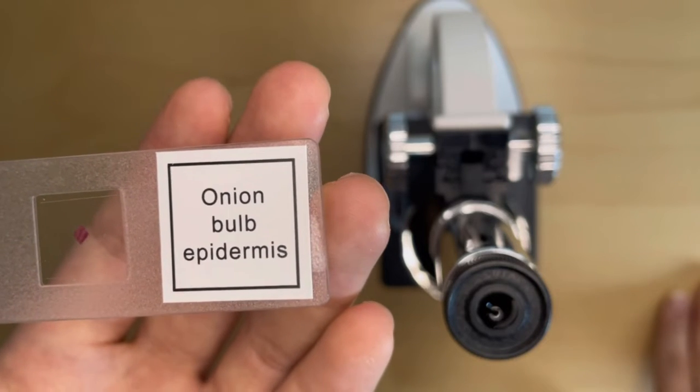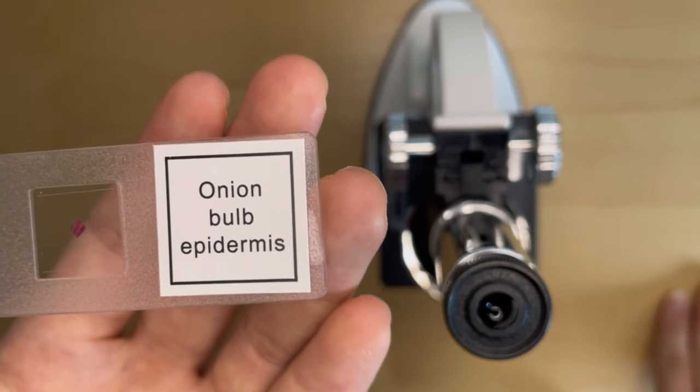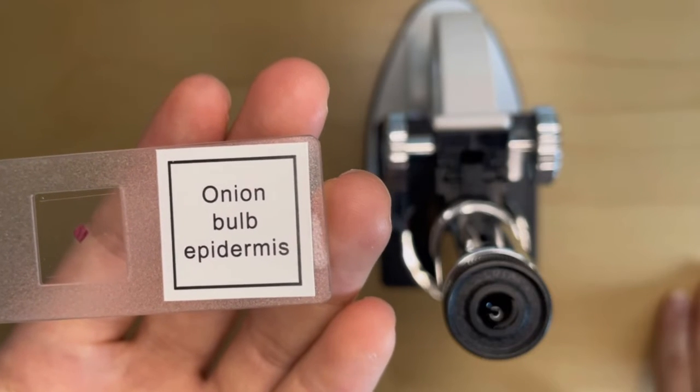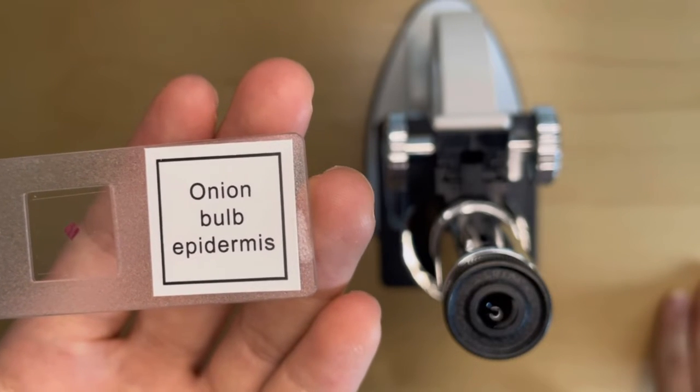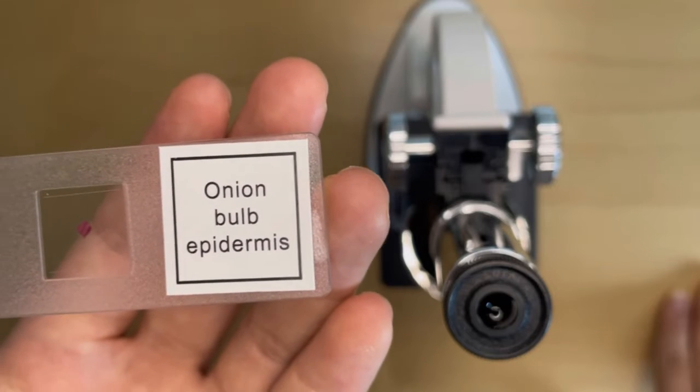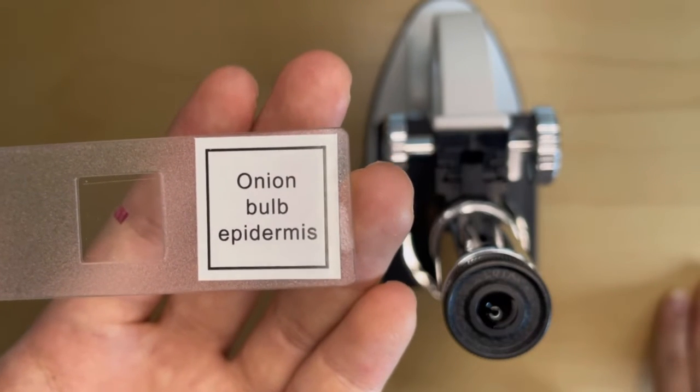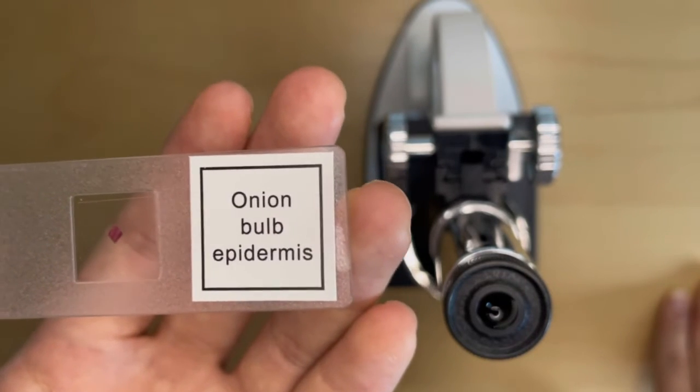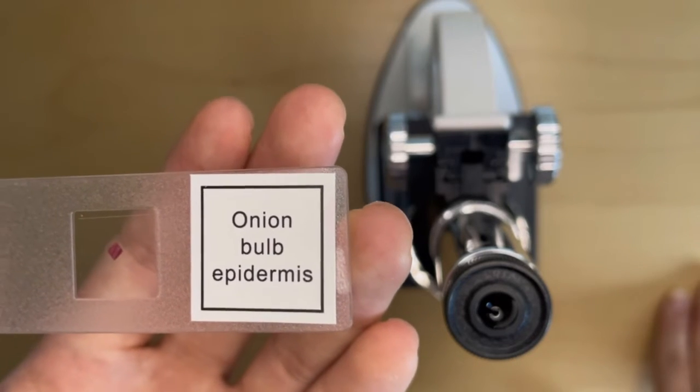The skin is the largest part of our body, so the bulb epidermis is the outer layer of an onion, but helps to protect the onion. And also it's growing. Okay, let's see how it looks like.